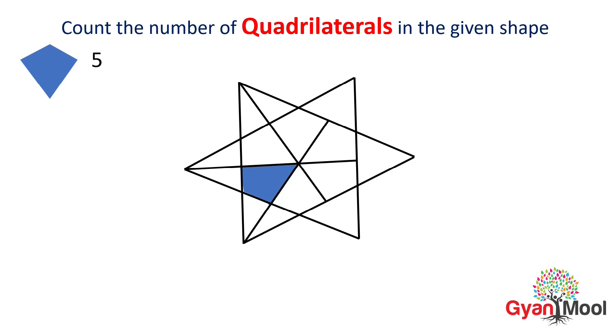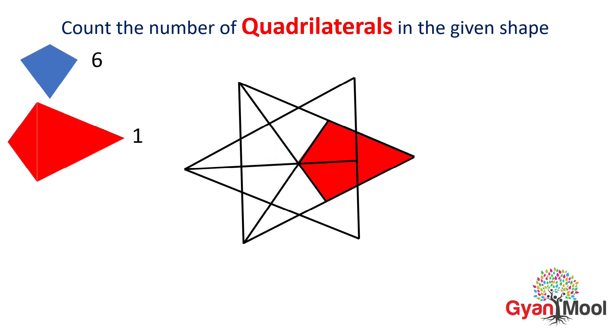Now we will count red quadrilaterals. These are 1, 2, 3, 4, 5 and 6.